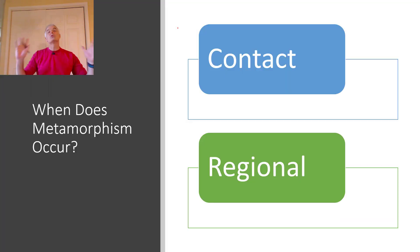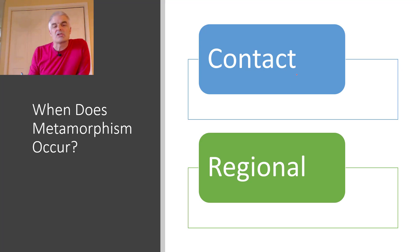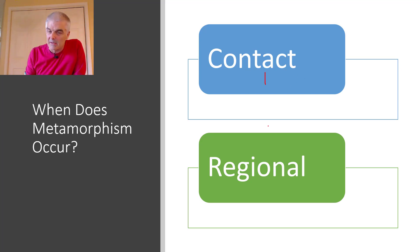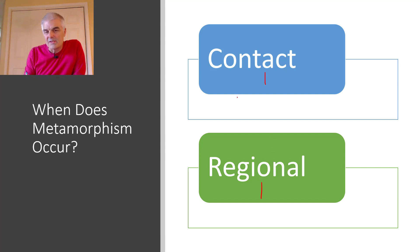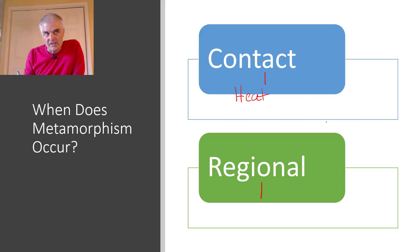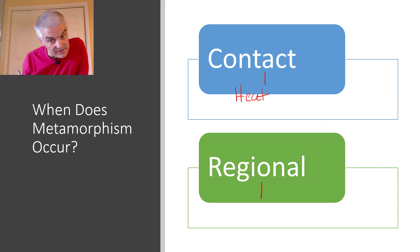Turns out there are two kinds of metamorphic rocks — or rather, they're caused by two things. They're either contact metamorphism or regional metamorphism. Contact metamorphism almost always has to do with heat. So if you have some lava that intrudes into a certain area, the rocks around it will heat up and they will metamorphize.